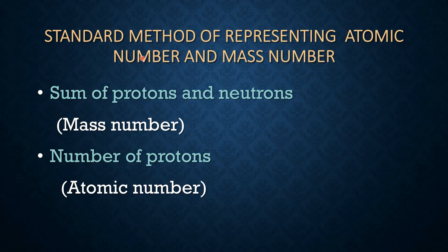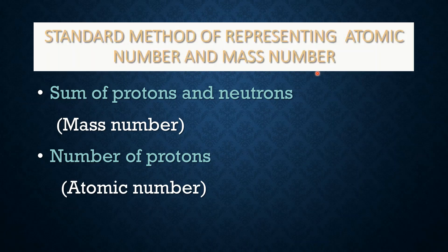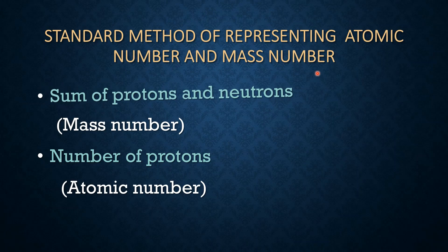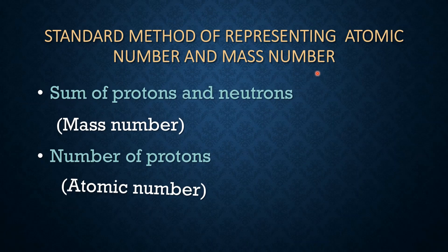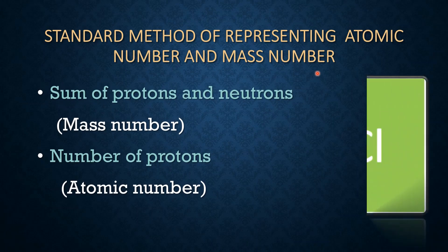After that, we learn about the standard method of representing atomic number and mass number. When representing an element, the mass number is written at the top and the atomic number is written at the bottom.